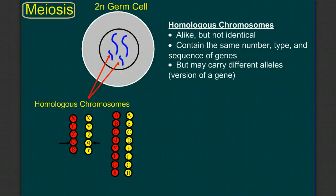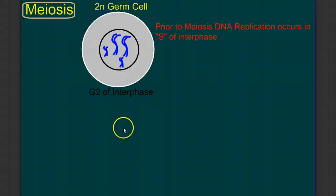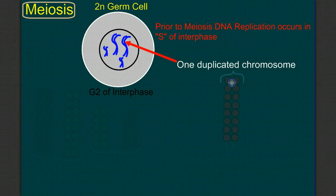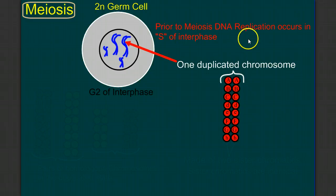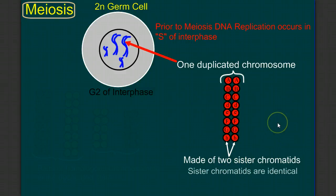The way we've drawn this cell, we're in G1 of interphase. But to prepare for any nuclear and cellular division, during S of interphase, DNA replication will occur, bringing us to G2 of interphase in preparation for a nuclear division event. A duplicated chromosome is made of two sister chromatids. The two sister chromatids are identical to each other because they're made through a semi-conservative DNA replication process.